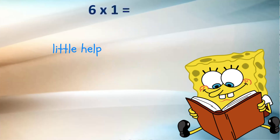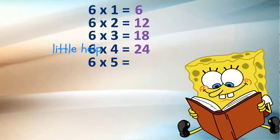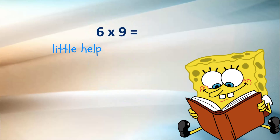6 ones are 6, 6 twos are 12, 6 threes are 18, 6 fours are 24, 6 fives are 30, 6 sixes are 36, 6 sevens are 42, 6 eights are 48, 6 nines are 54.